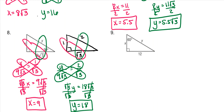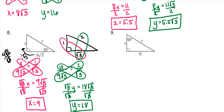For pattern people: you always need your short side first. From the longer leg to get to the short side, divide by the square root of 3. So 9 square roots of 3 divided by the square root of 3 cancels and gives 9. Then knowing your short side, multiply times 2, which gives 18 for y.